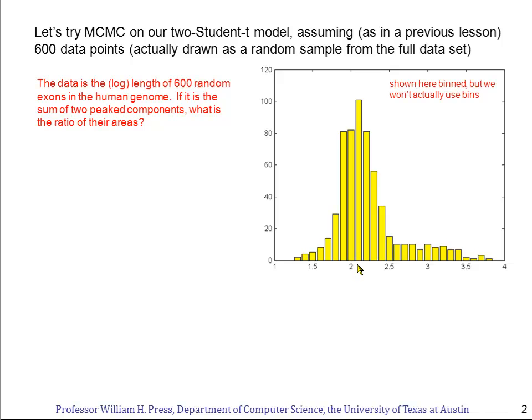We have a peak around 10 to the 2, that's about 100. But we also see something that looks like a second peak here around 10 to the 3 — a length of about 1,000. We want to ask: if this data is described as the sum of two different peaks, what is the ratio of the areas in their peaks? That is to say, how many exons are there in each component?